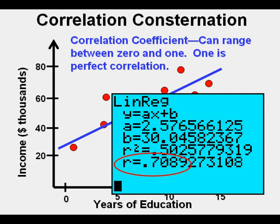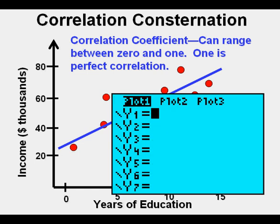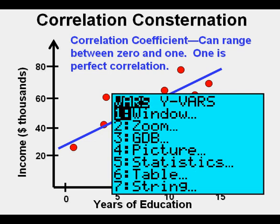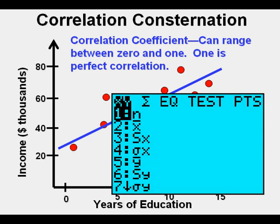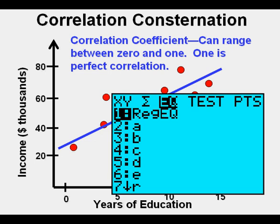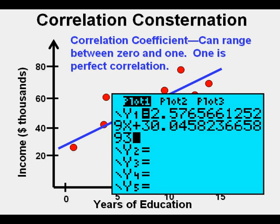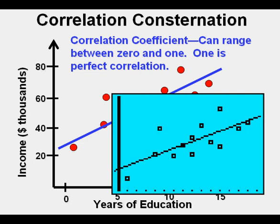Possible R values range from 0, which is no correlation, to as high as 1, which is perfect correlation. Depending on the situation, something above 0.8 can be seen as strong correlation. To enter the equation and see how it fits our points, press Y equals, then the VARS key, scroll down to 5 Statistics, press ENTER, arrow twice right to Equation, and press ENTER. See how the equation is pasted into Y1? Now press the GRAPH key. This is the calculator's line of best fit — quite similar to the one drawn by hand in blue earlier.